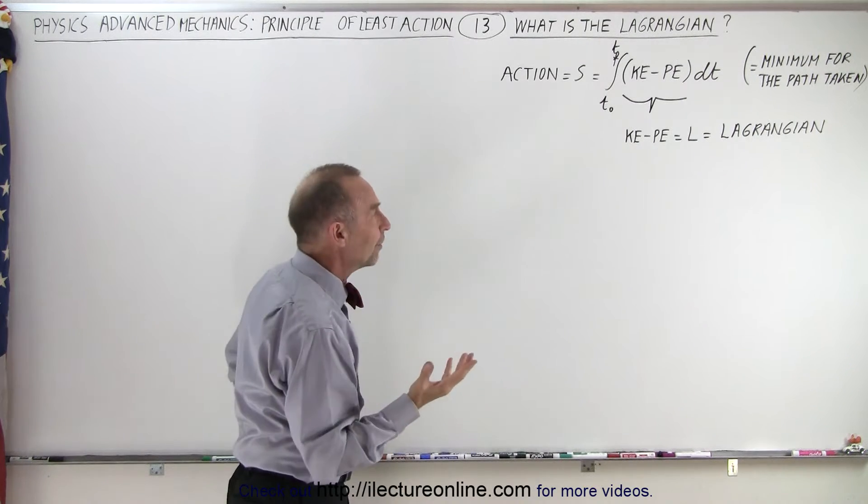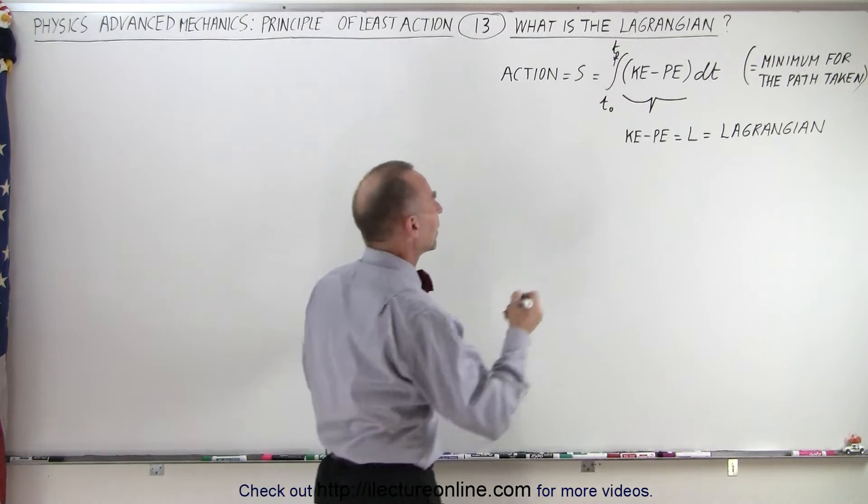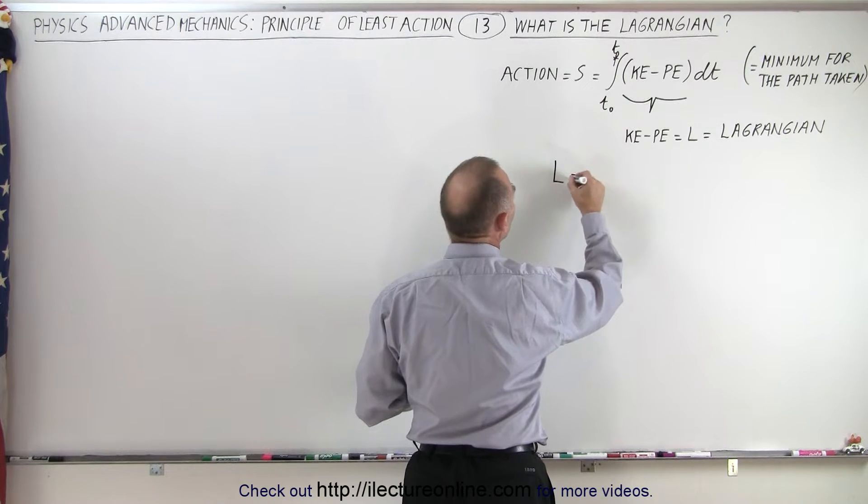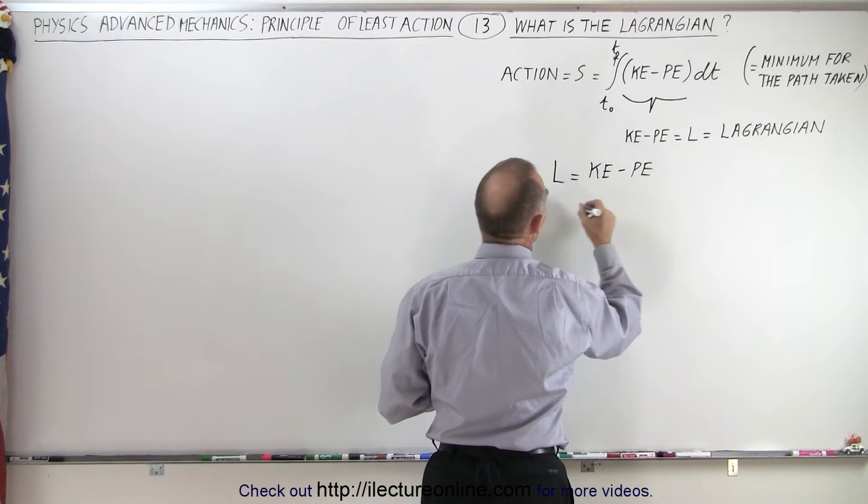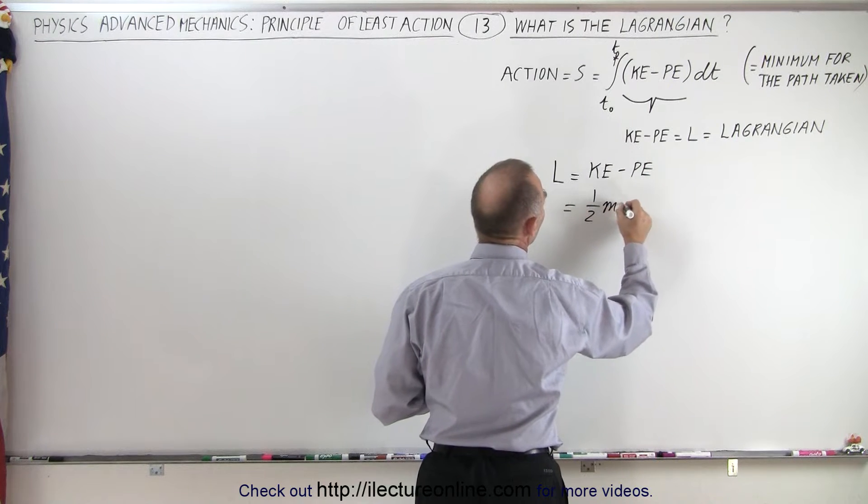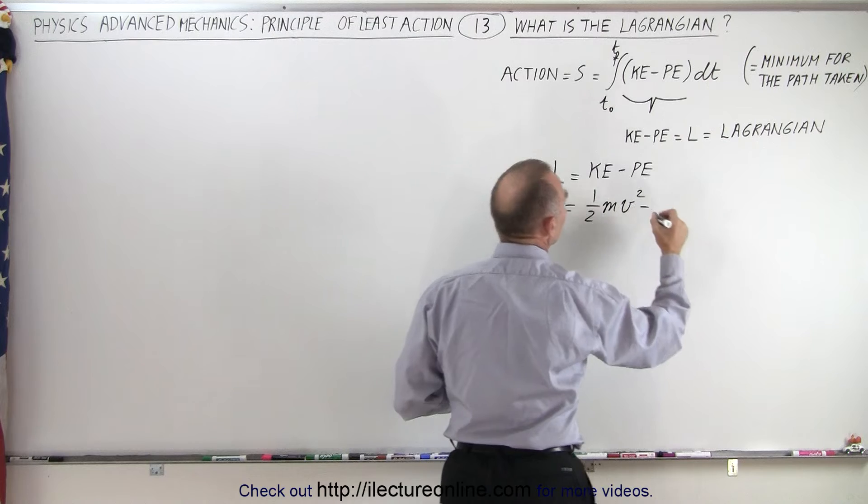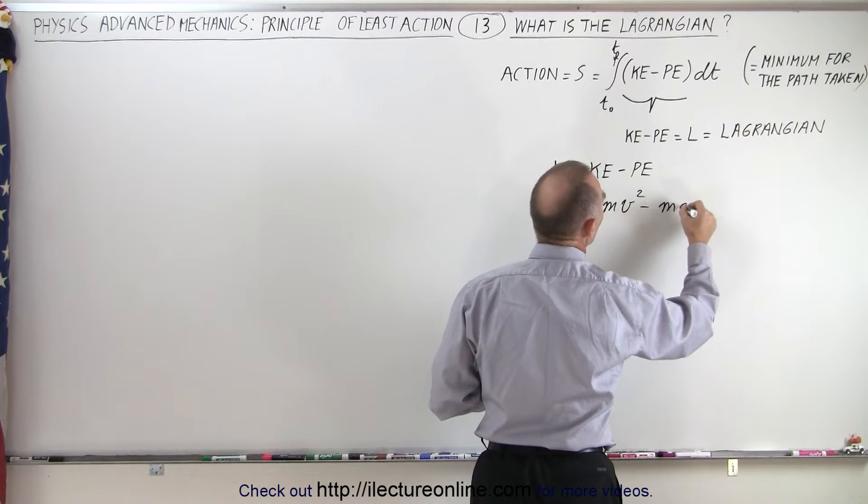So what does that signify? Well, let's figure out what that looks like. So since L is equal to the kinetic energy minus the potential energy, that can be written as one-half mv squared minus the potential energy, which is mgy.